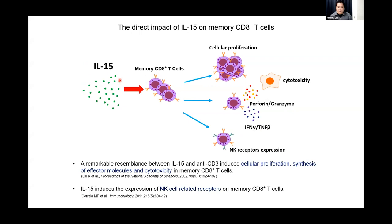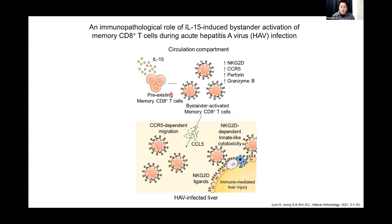However, IL-15 itself can activate memory CD8 T-cells and induce various effector functions, such as proliferation, cytotoxicity, and production of effector molecules, and also the expression of NK-cell-related receptors. In the case of acute HAV infection, previous work from our lab reported the immunopathological role of bystander-activated memory CD8 T-cells. We found that together with CD8 T-cells specific for the HAV virus, non-HAV-specific CD8 T-cells were activated in a bystander manner by increased levels of IL-15. These bystander-activated memory CD8 T-cells expressed increased levels of NKG2D and migrated to the infected liver by CCR5-mediated mechanisms, where they exerted NKG2D-dependent innate-like cytotoxicity, significantly correlated with the severity of liver damage in patients with acute HAV infection.